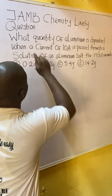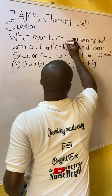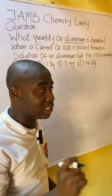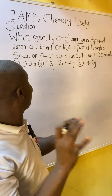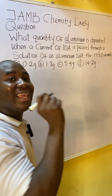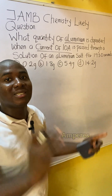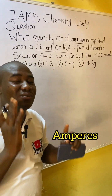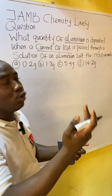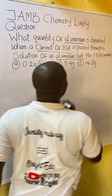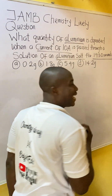The question says: what quantity of aluminum is deposited when a current of 10A — here A means amperes, which is very important to note — is passed through a solution of aluminum salt for 1,930 seconds?